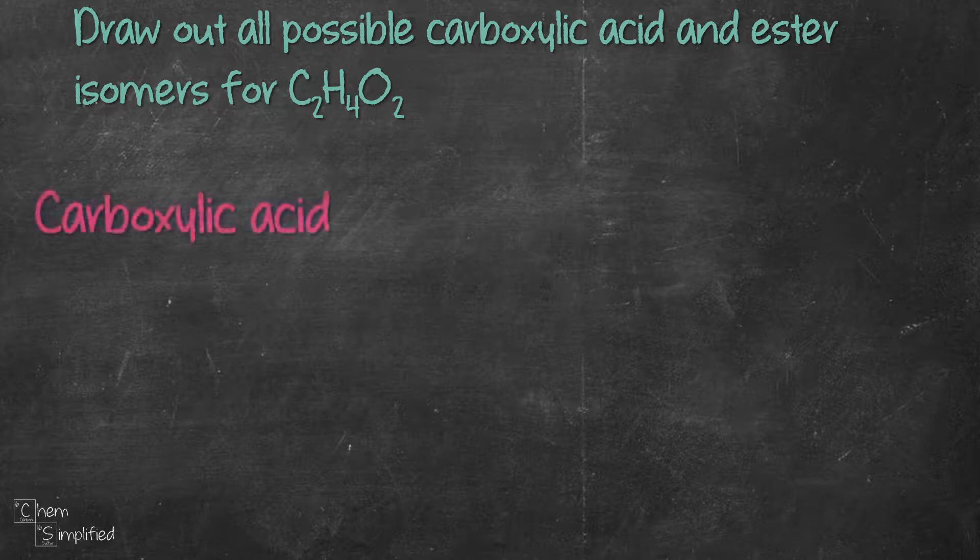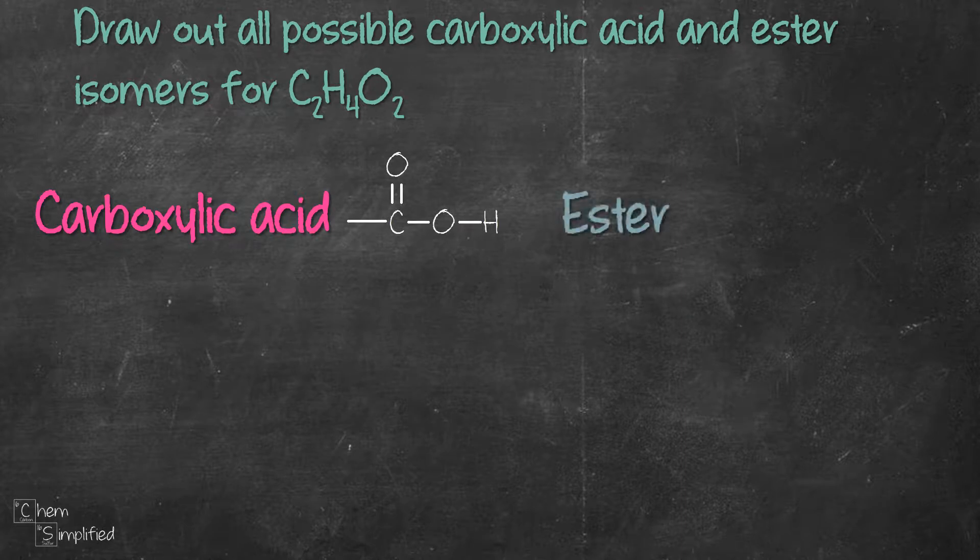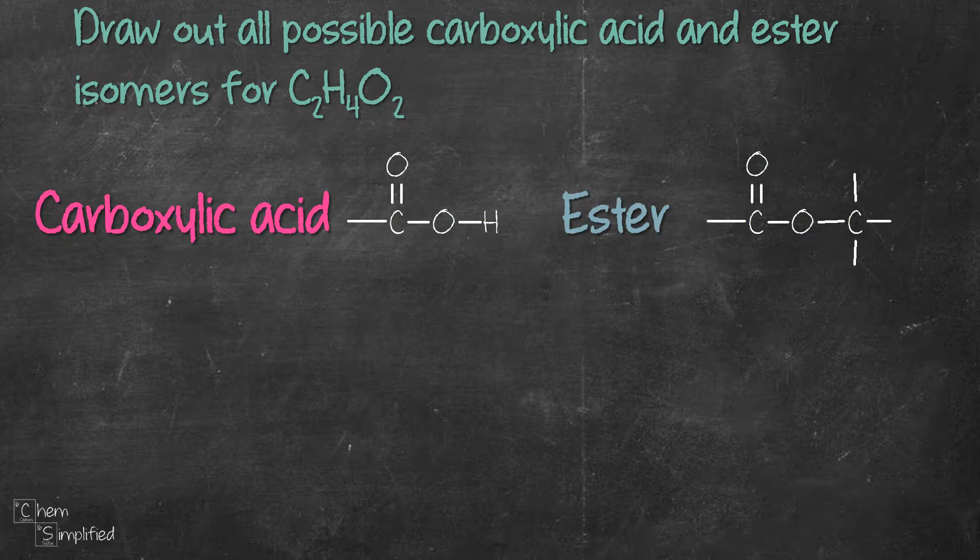Carboxylic acid has a carboxyl group which is COOH, whereas ester has a carbonyl group attached to O and C like this, C double bond O-O-C. The difference between carboxylic acid and ester is carboxylic acid has an H connected to an O, whereas ester has a C connected to an O.